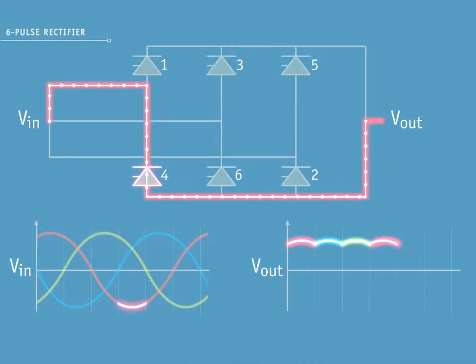The fourth pulse conducts the negative side of red phase. The fifth pulse conducts the positive side of blue phase. And the sixth pulse conducts the negative side of yellow phase.